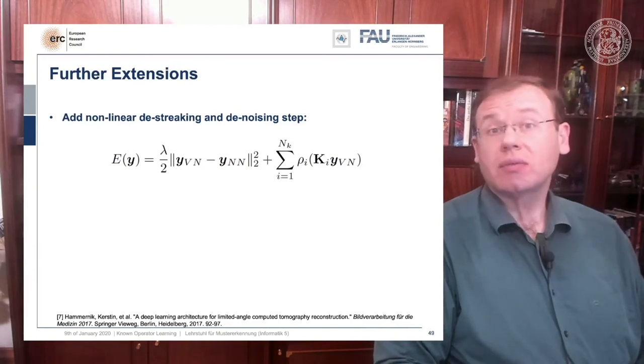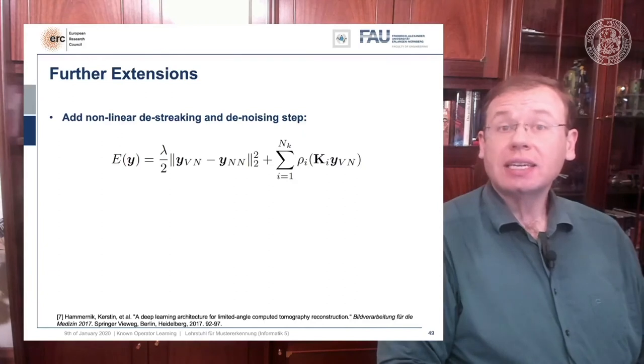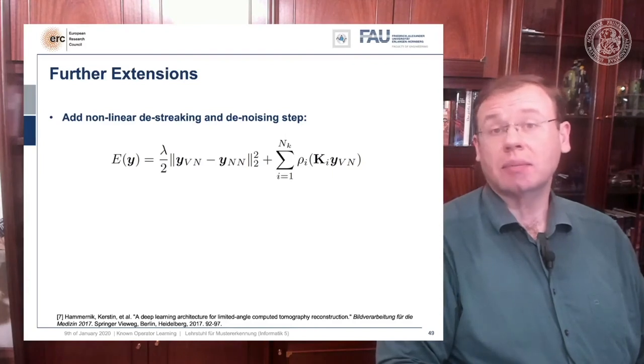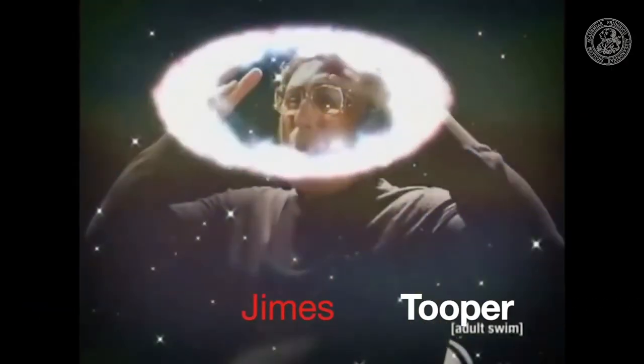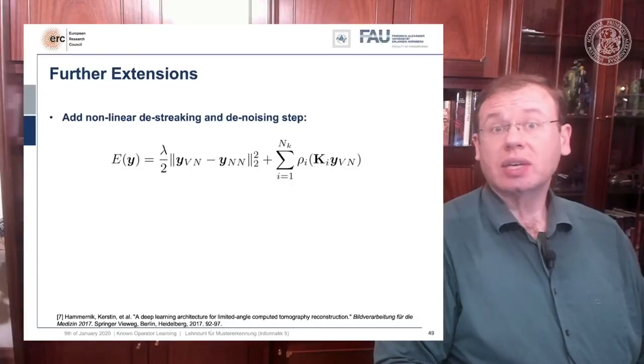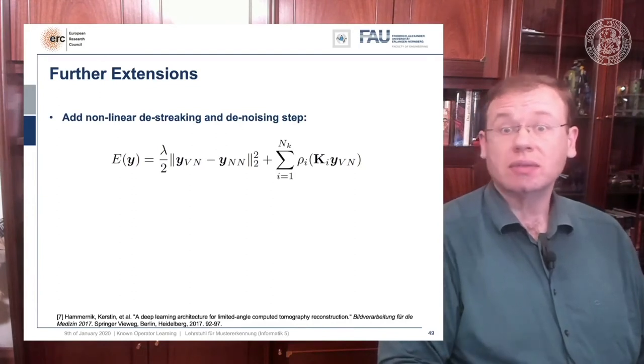If you want to do that efficiently, you could essentially formulate this as a recurrent neural network. And how do we deal with recurrent neural networks? Well, we unroll them. So any kind of energy minimization can be mapped into a feed forward neural network if you fix the number of iterations.